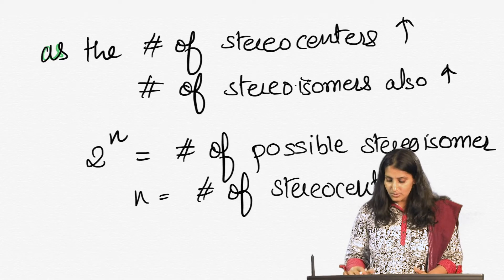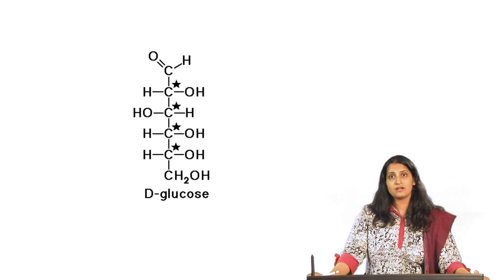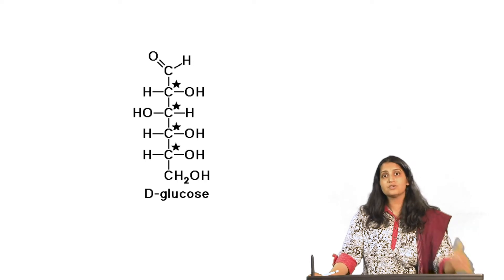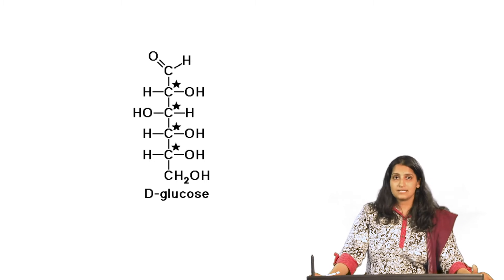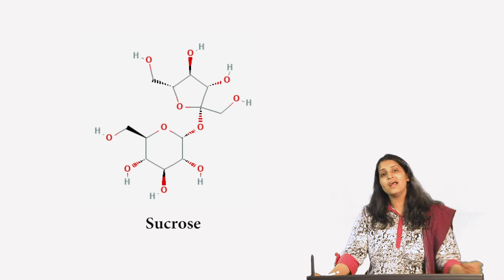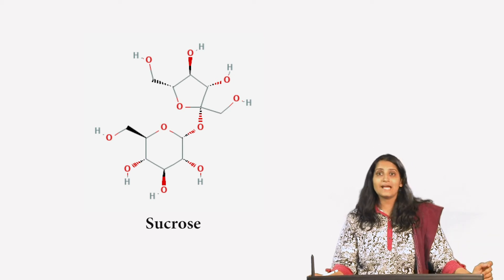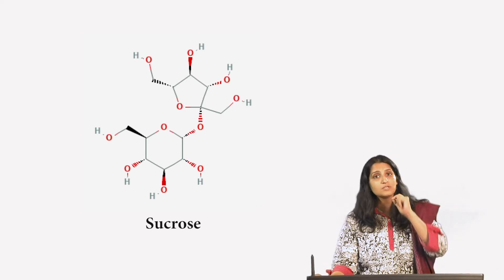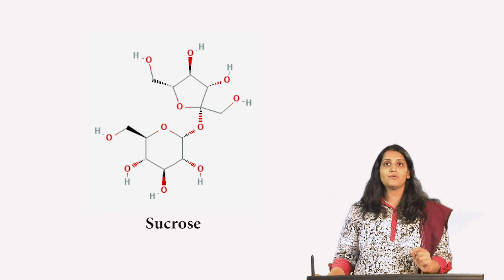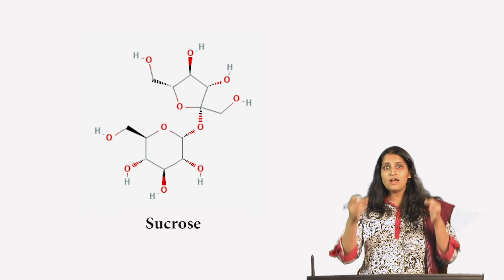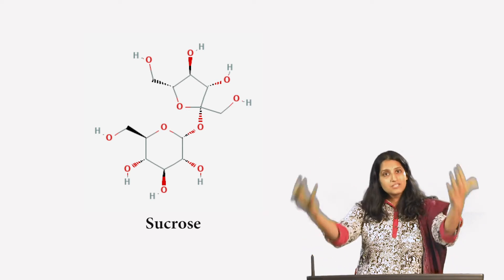For example, the open chain form of glucose has around four stereocenters, meaning the possible stereoisomers of glucose in open form is 2 raised to 4, that is 16. Sucrose has nine stereocenters — this is the same sugar you have in your kitchen — so the number of stereoisomers for sucrose goes to 2 raised to 9, that is 512 different stereoisomers. Having more and more stereocenters really increases the complexity of the molecule.